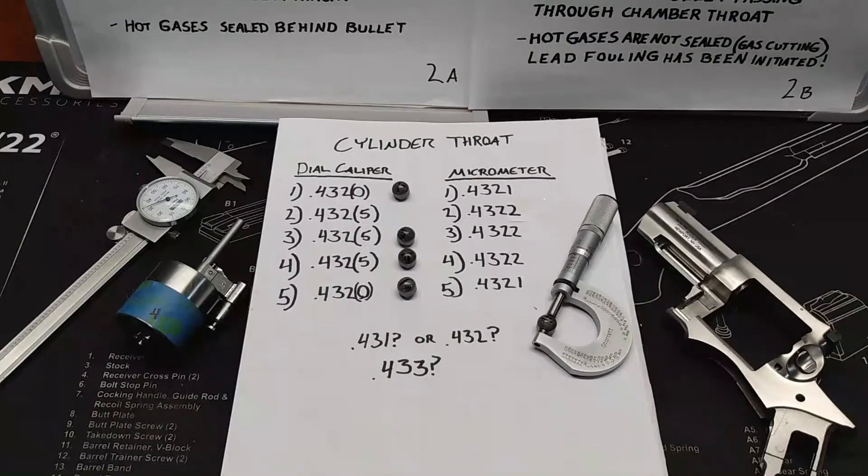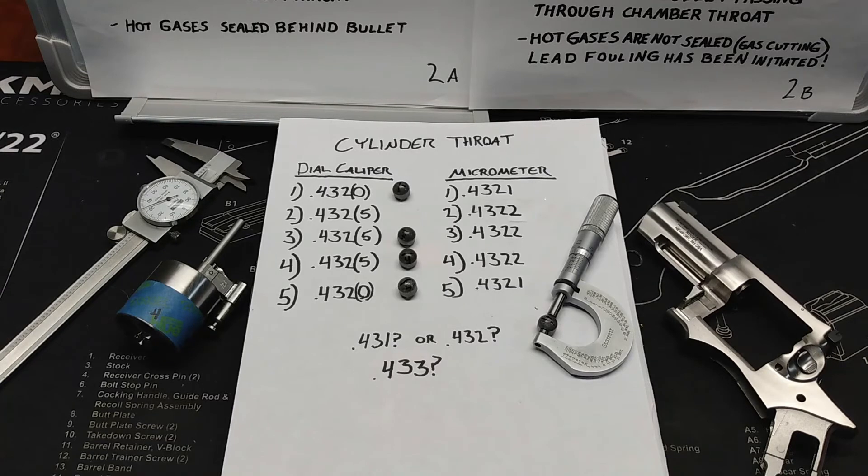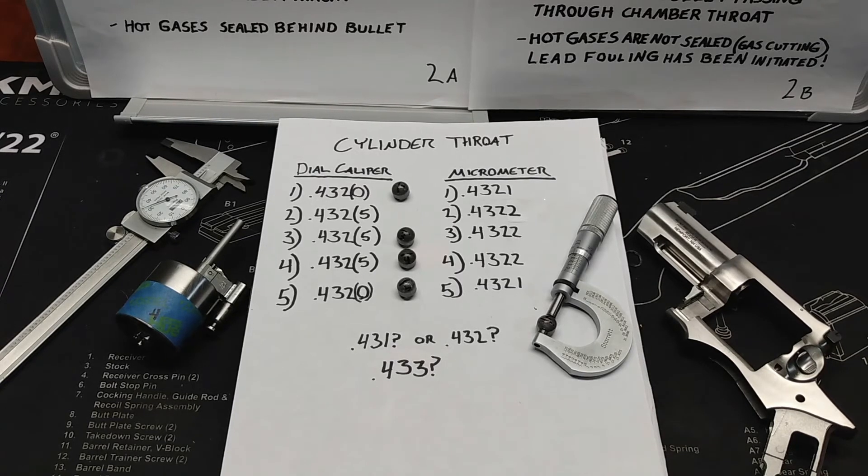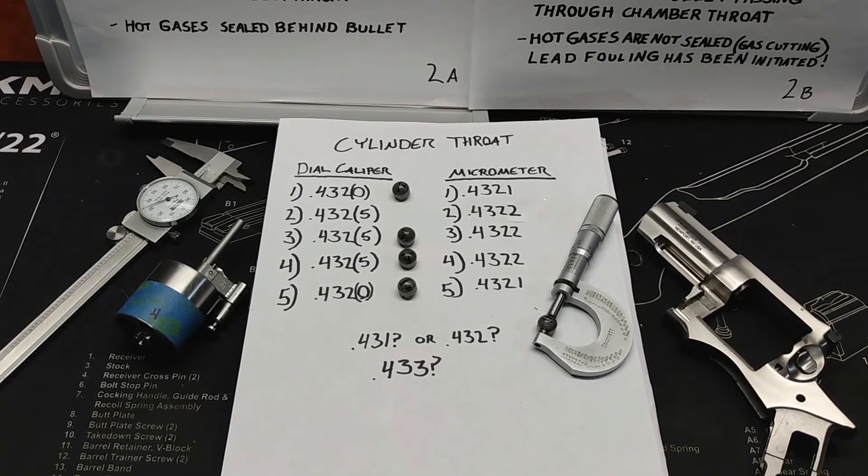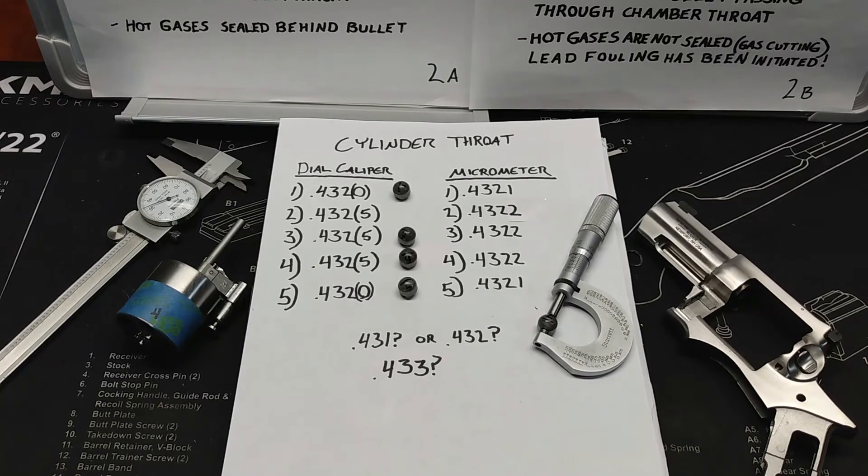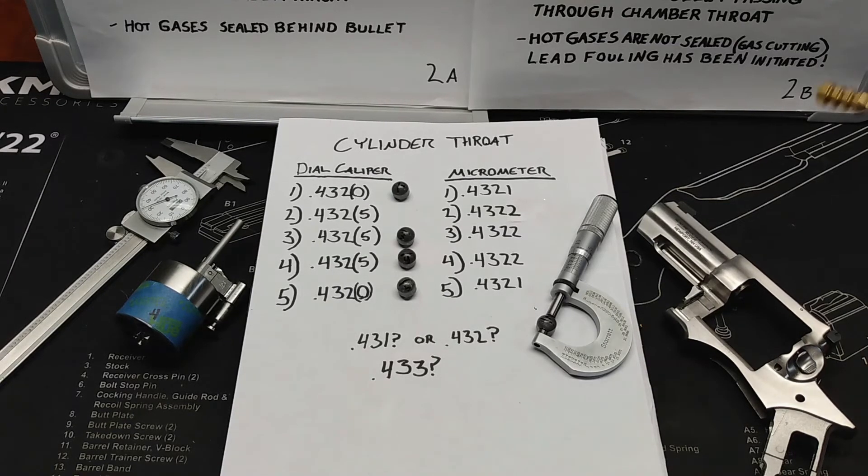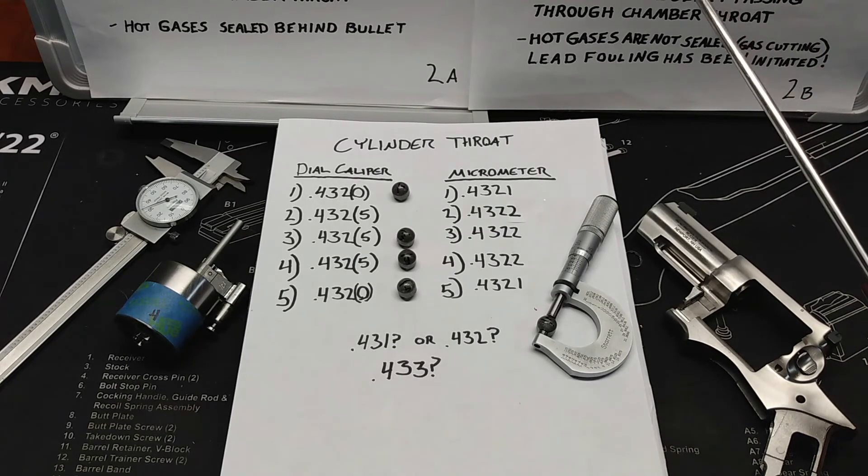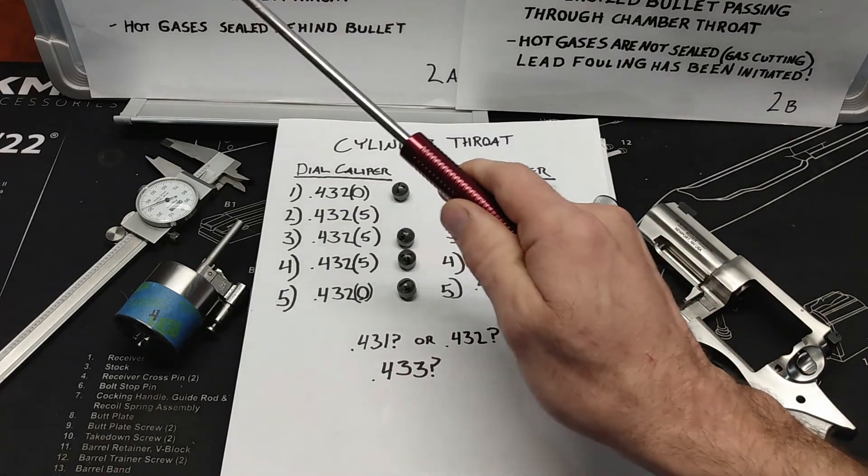What does this mean to me as a bullet caster or as someone who is purchasing cast bullets or someone who is trying to diagnose a leading problem that we've been having? We've probably received a lot of advice like, hey, you need a harder lead or hey, you need to keep your velocities down. So I tell you what, where we're going to start is keeping it simple. We're going to start with keeping the hot gases behind the bullets, folks.